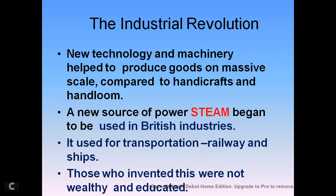New technology and machinery helped to produce goods on a massive scale, on a large scale, compared to handicrafts and hand looms. Before machinery, people made things by hand — handicrafts and hand looms. But with the help of machinery, they now produce things in large numbers. A new source of power — steam — began to be used in British industry, and steam engines were built to run many big machines.